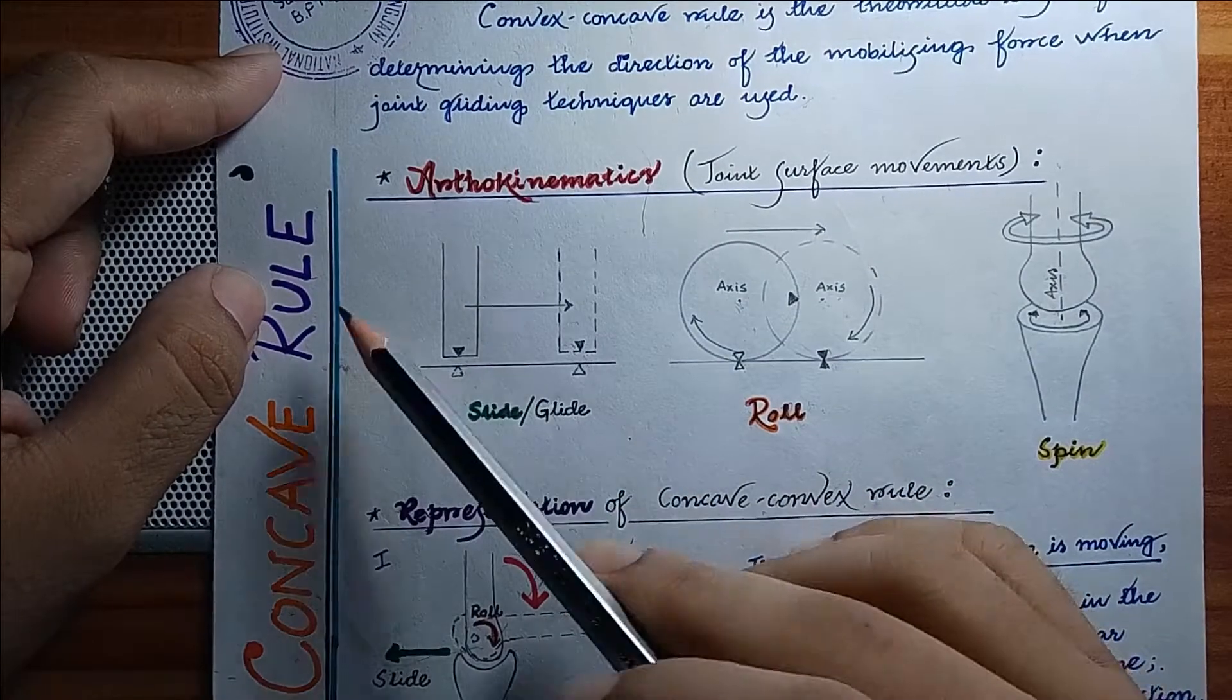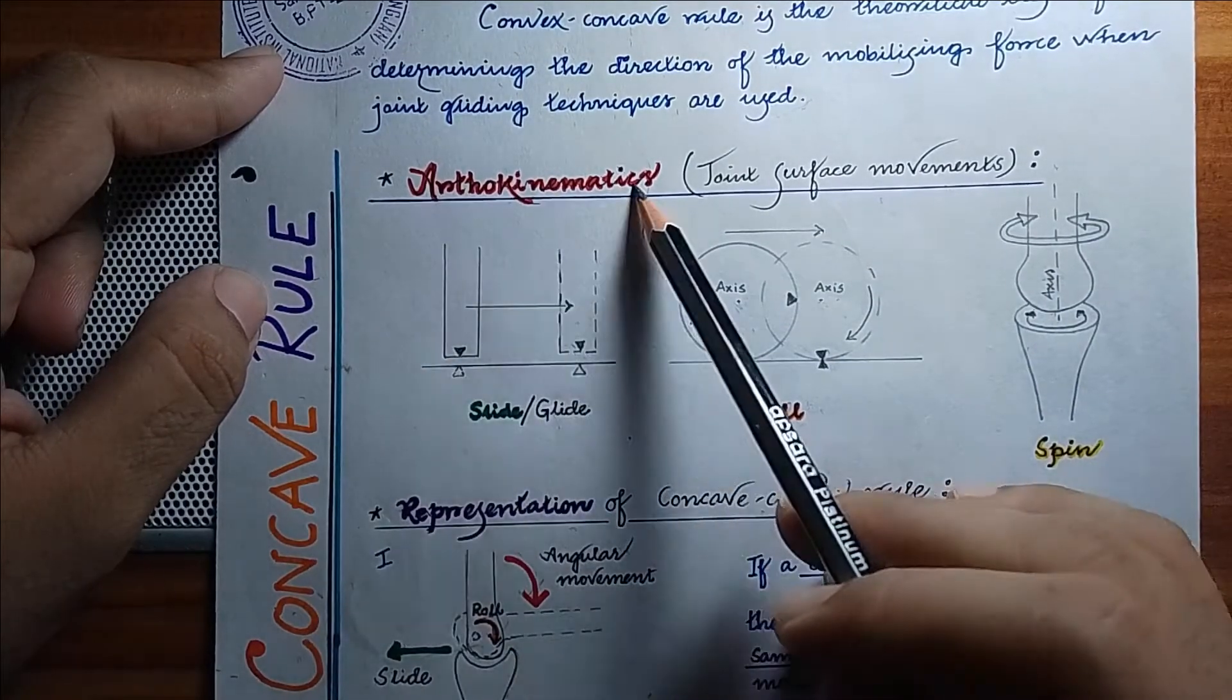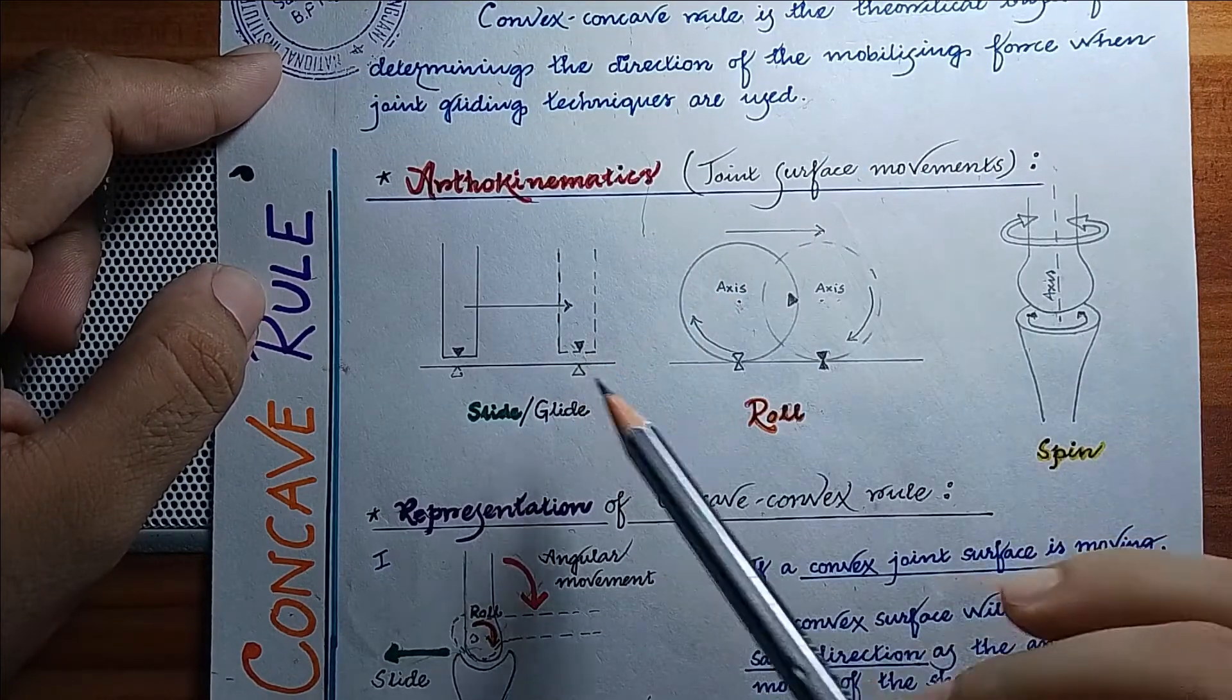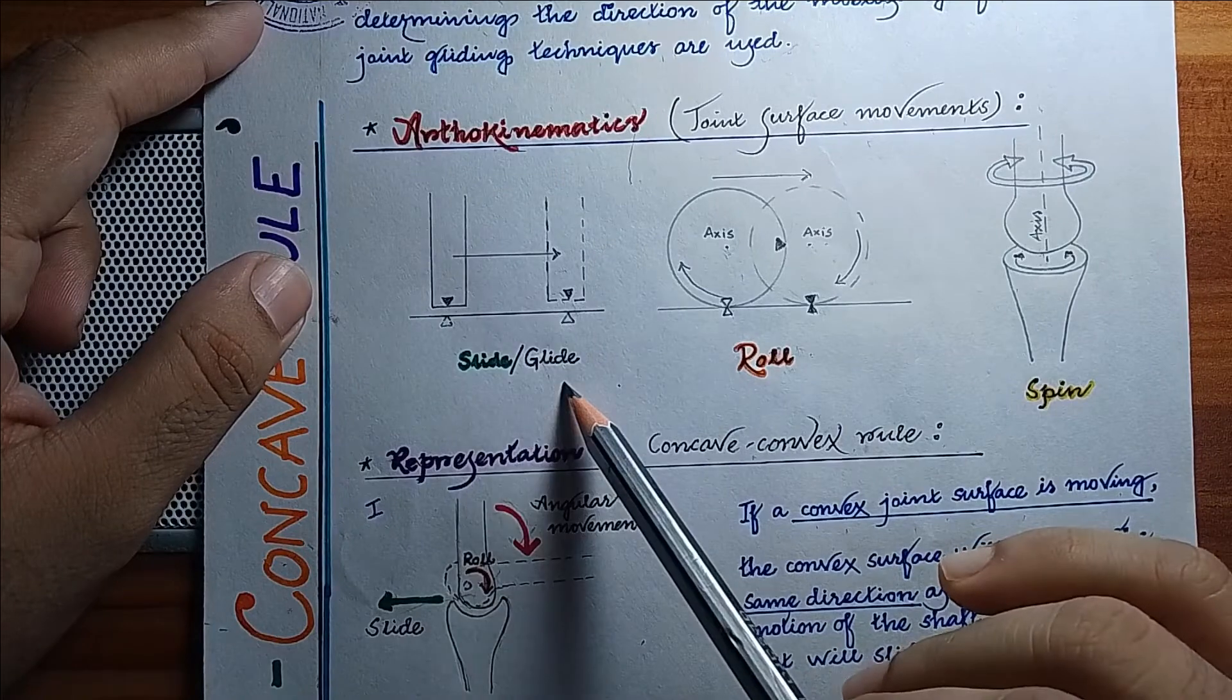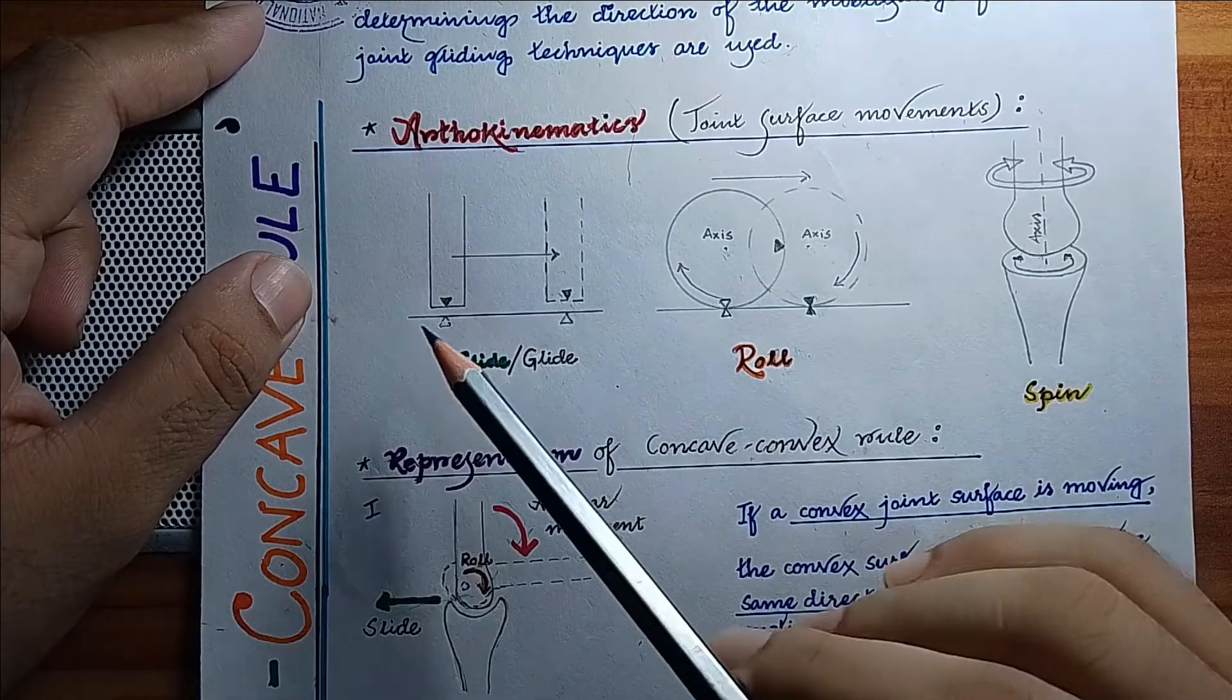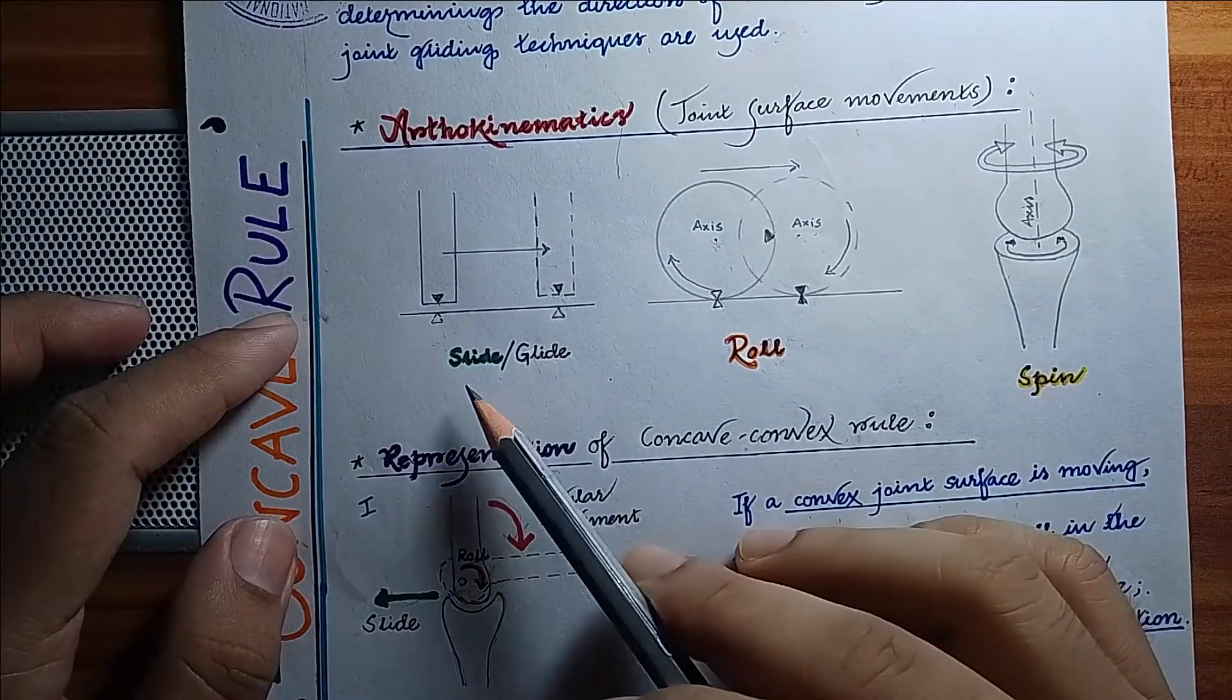There are three joint surface movements: slide or glide, roll, and spin. First is slide or glide. A slide is a translatory motion in which the same point on the moving joint surface comes in contact with new points on the opposing surface.